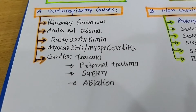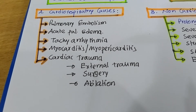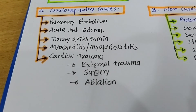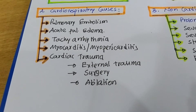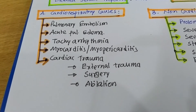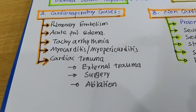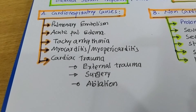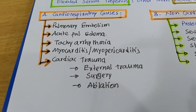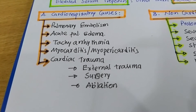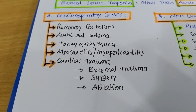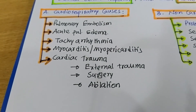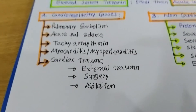Myocarditis or myopericarditis also causes an increase in serum troponin level. Note that serum troponin is an enzyme present in the myocardium or muscle cells, so pericarditis alone cannot increase serum troponin — but if there is myopericarditis, serum troponin may be increased. Any type of cardiac trauma — such as a road traffic accident, a blow to the heart, cardiac surgery, or cardiac ablation — may also cause an elevated serum troponin level.